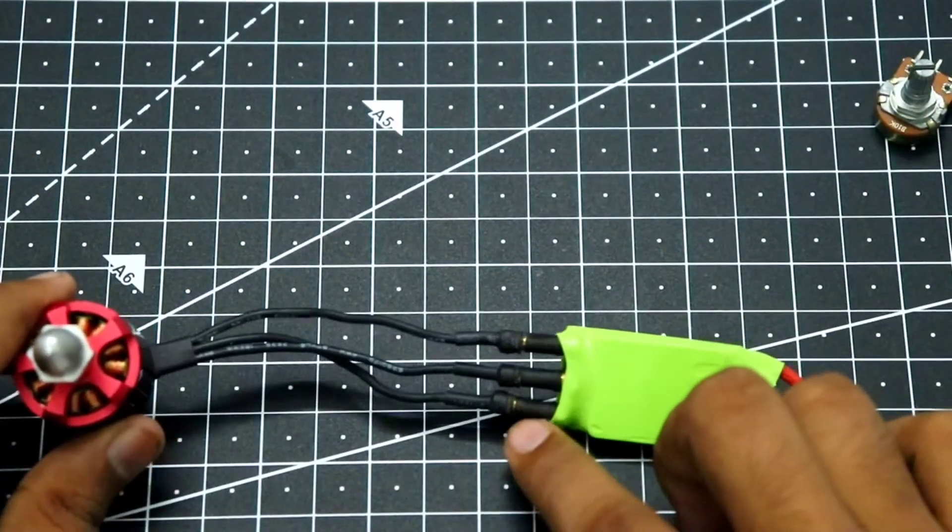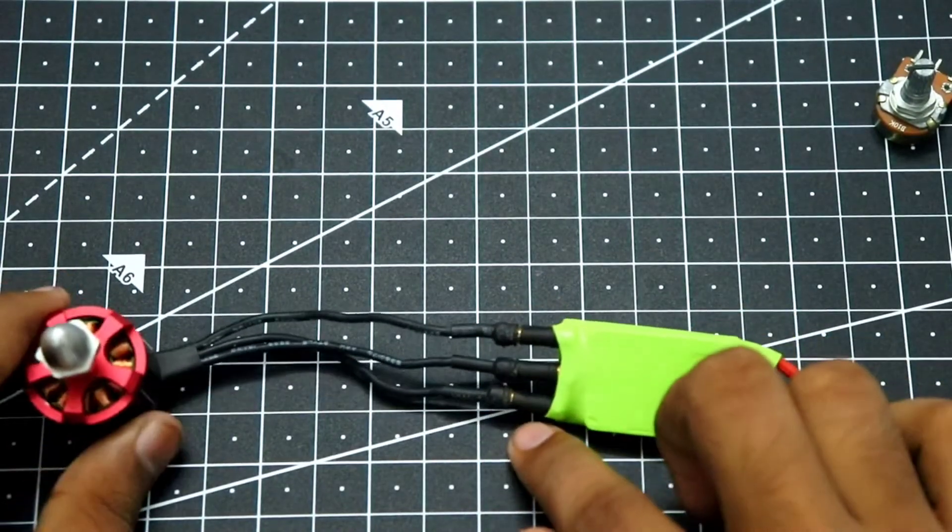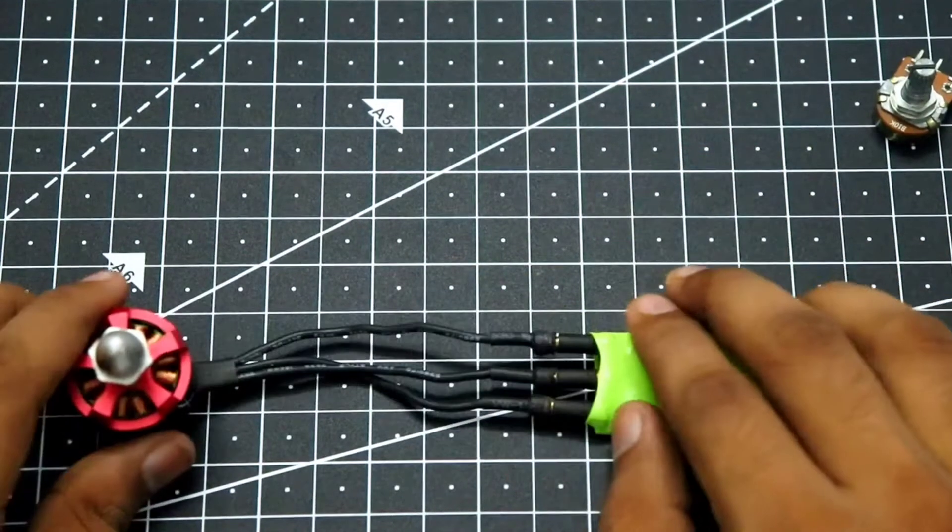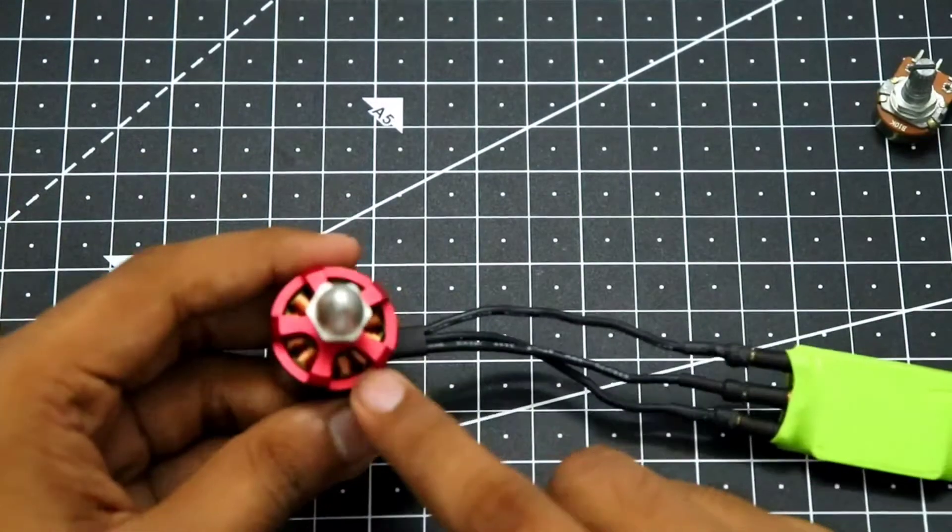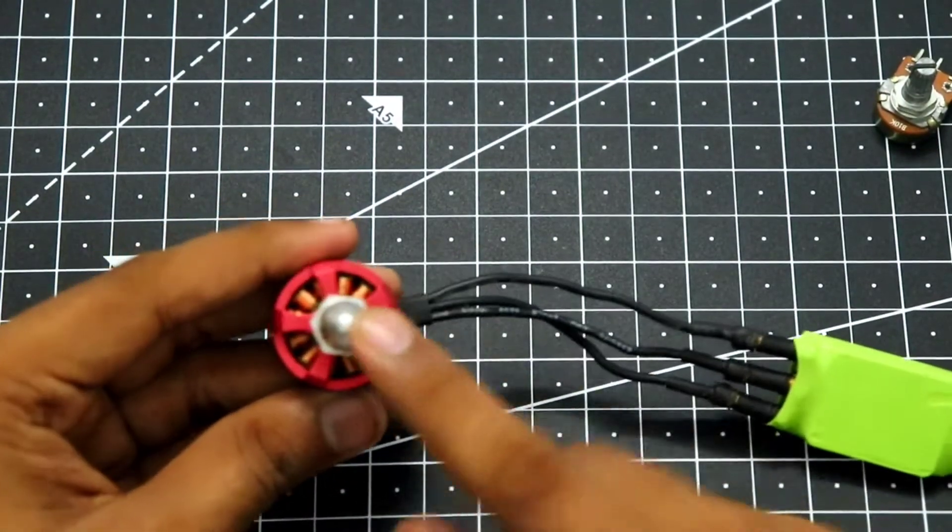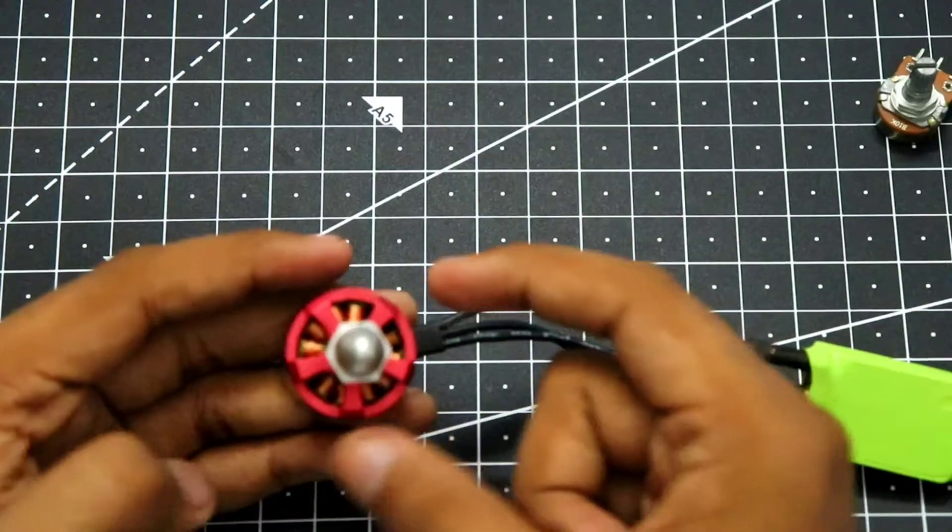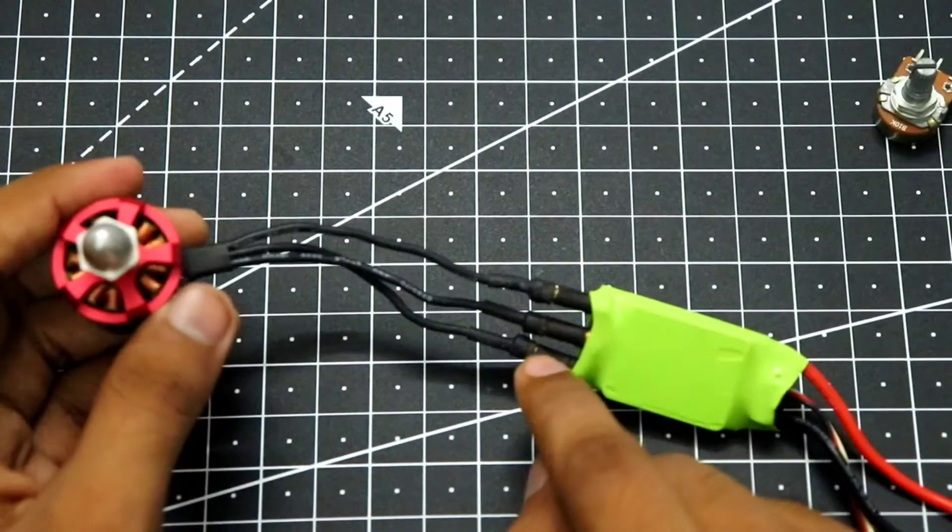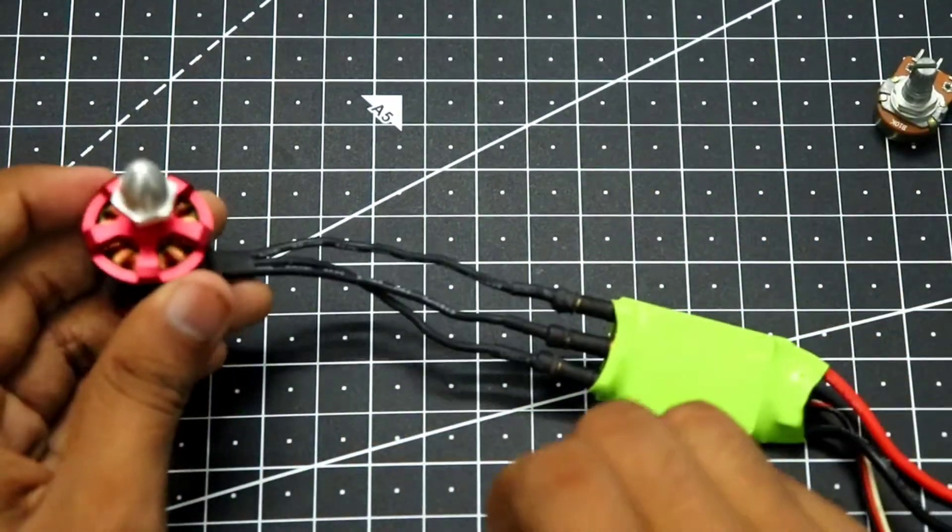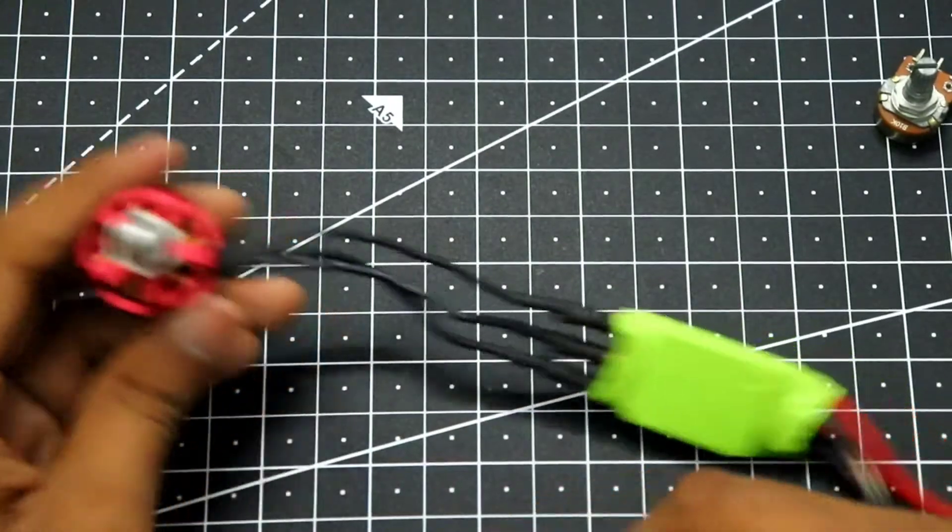It does not matter in which order you connect them, this will just work fine. But if you want to switch the rotation, that means if the motor is spinning clockwise and you want it to spin anti-clockwise, then you can simply switch any of the two wires that will make it go the other direction.